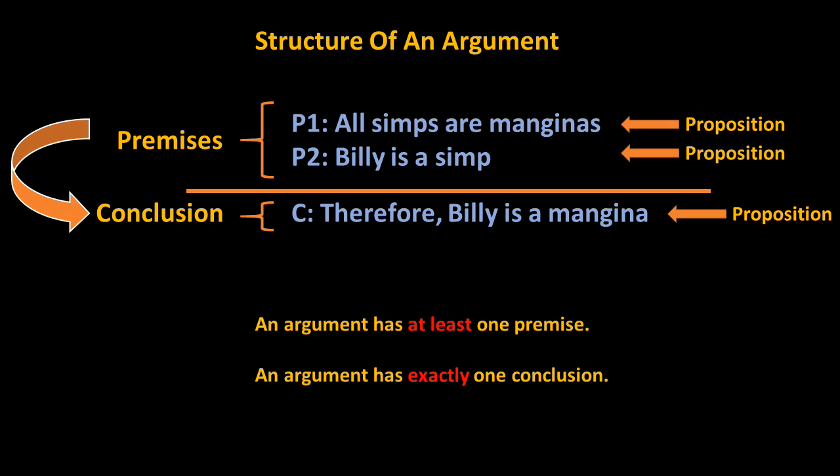In an argument, we accept one proposition — the conclusion — on the basis of other propositions, the premises. The premises are said to contain evidence for the conclusion. The conclusion is said to follow from the premises. In most general terms, we can say that an argument is a group of propositions where one proposition, the conclusion, is claimed to follow from the others, the premises.